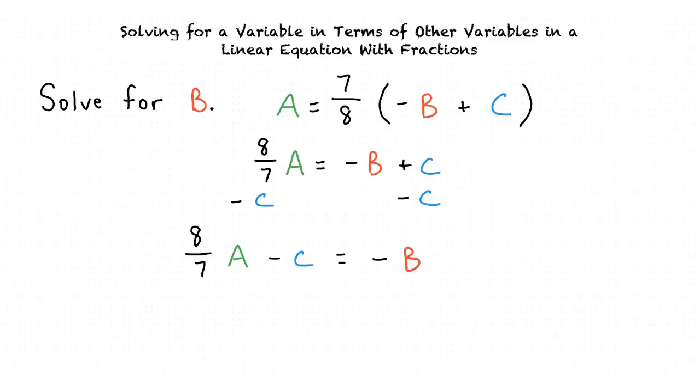Now that we have b all by itself we are done right? Not quite. We still have a negative sign in front of b. Another way we could write this problem would be 8 sevenths a minus c equals negative 1 times b. In order to get rid of the negative 1 we must multiply both sides of the equation by negative 1.